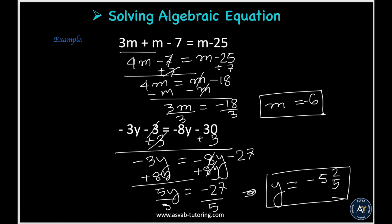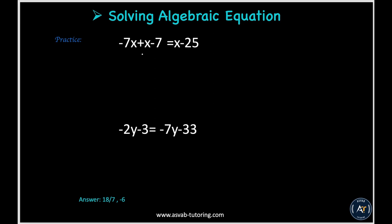Here I have two problems listed — try them the same way I did, following each step. The answers are 18 over 7 and 6. If you get the same answers, you're good. If not, practice one more time to make sure your concept is clear.